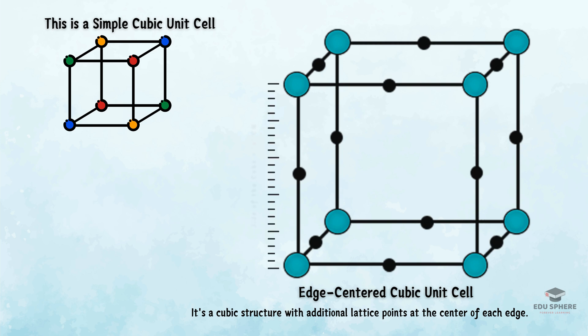To understand why, let's perform a simple thought experiment. Pick a corner point, let's call it A. If we move a distance of half the edge length in a particular direction, we land on another lattice point, B.